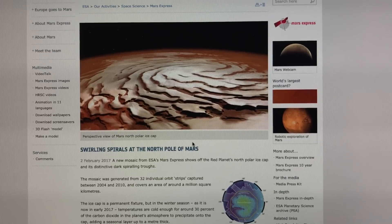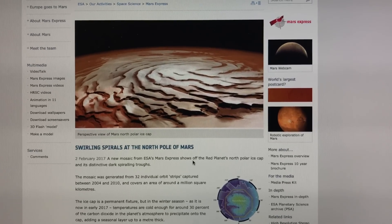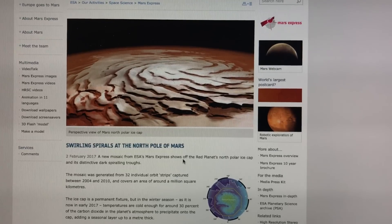So anyway, this is the north pole of Mars. This is frozen carbon dioxide. I'll post the link below.